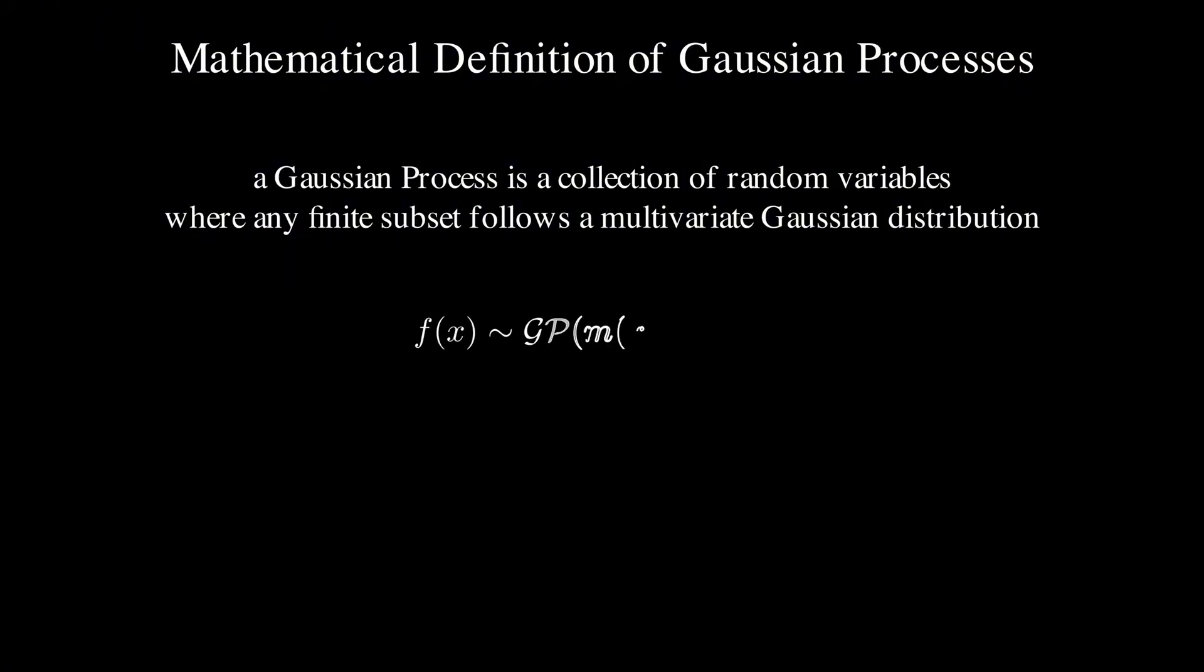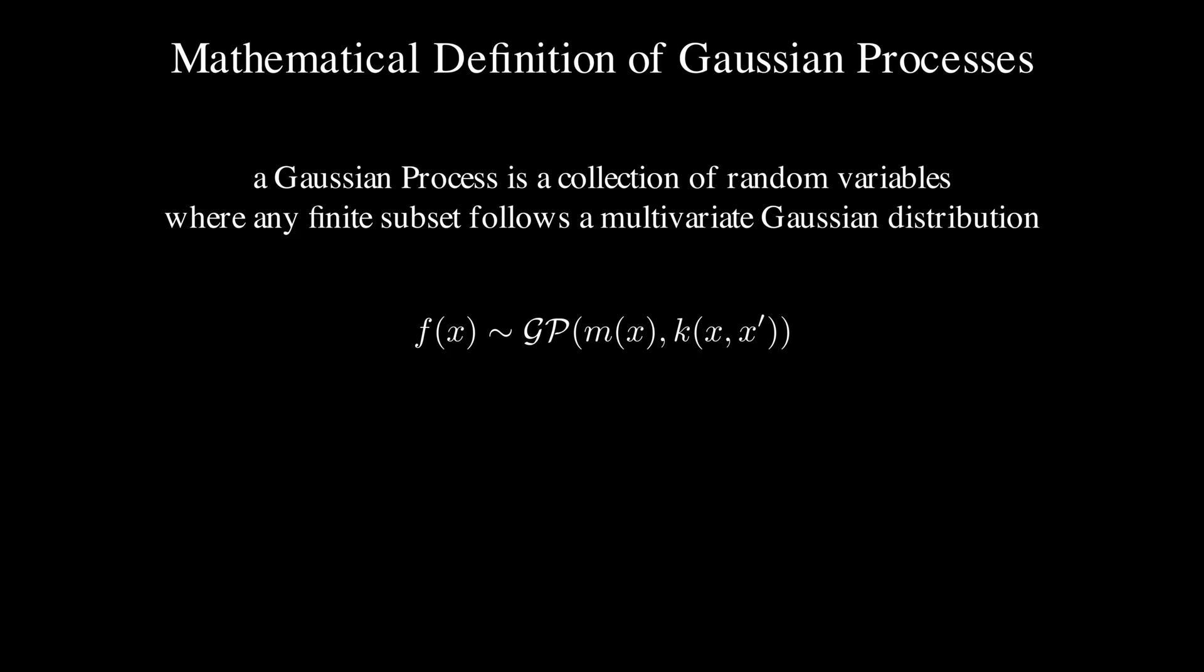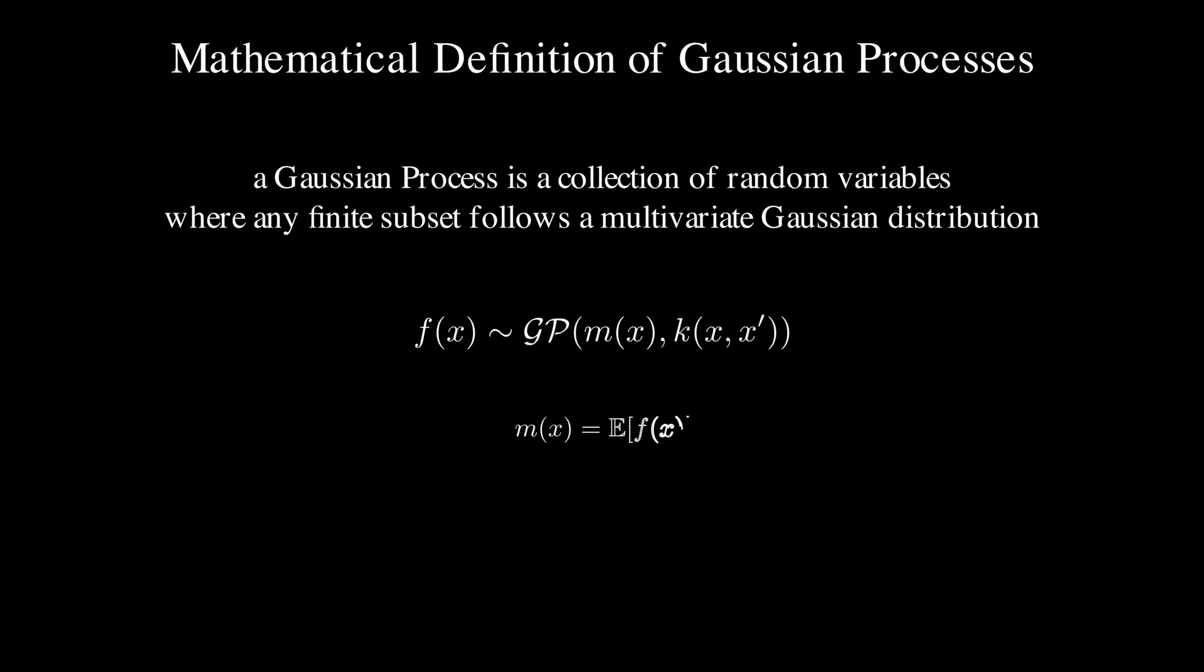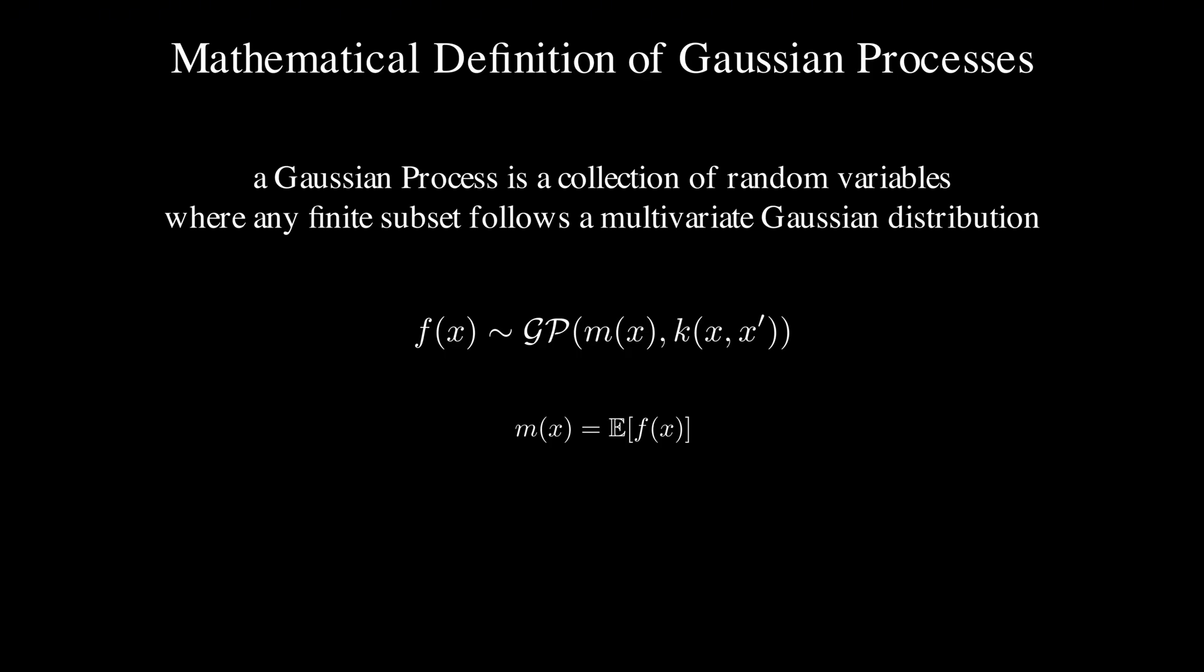We write this as f(x) is distributed according to a GP(m(x), k(x, x')). Here, m(x) is the mean function, which gives us the expected value of f at any point x and k(x, x') is the covariance function or kernel, which tells us how points relate to each other.